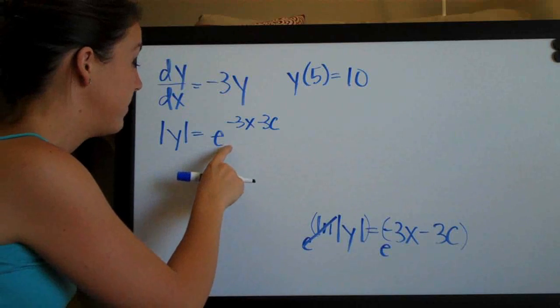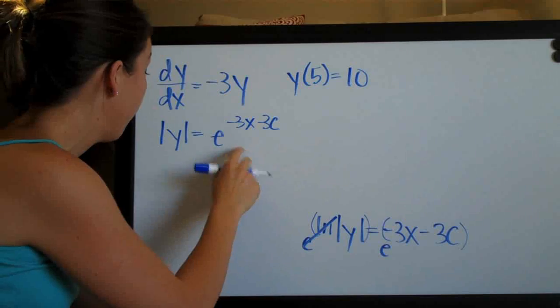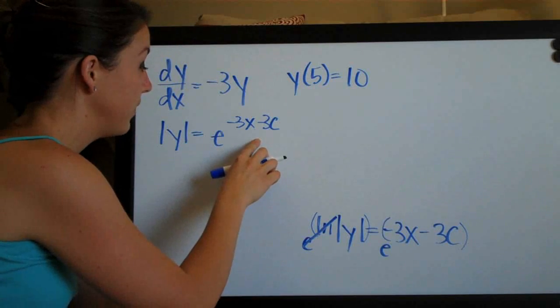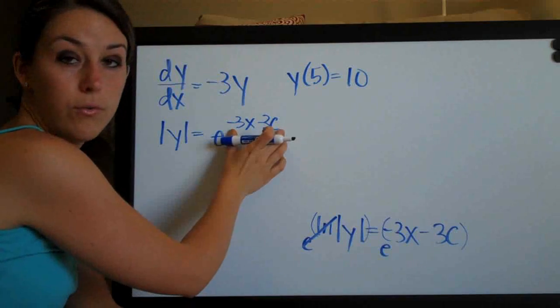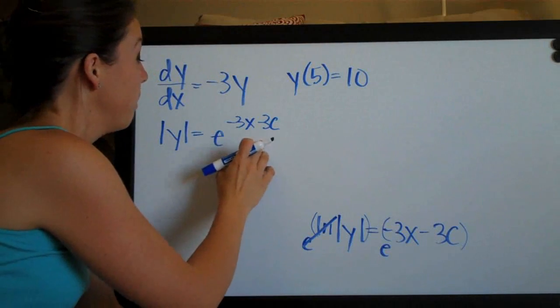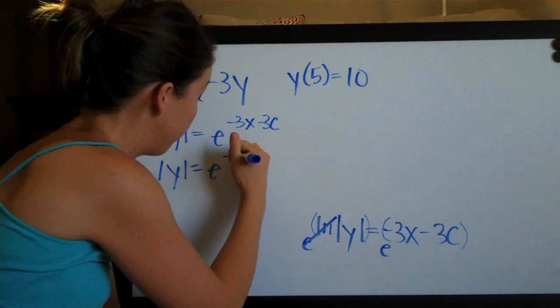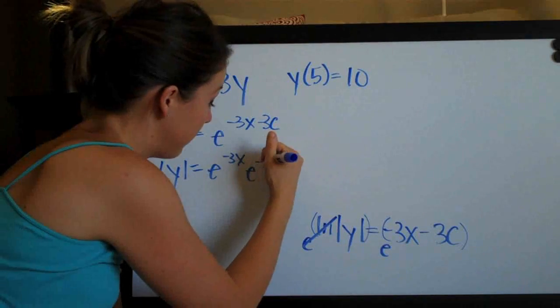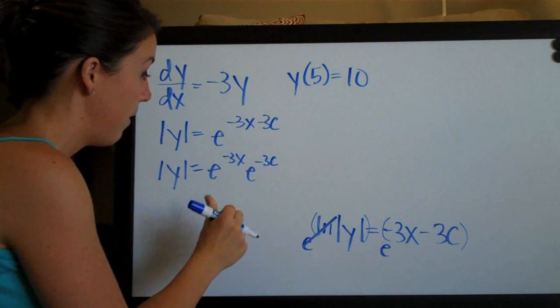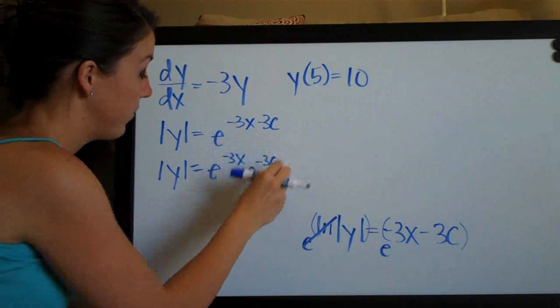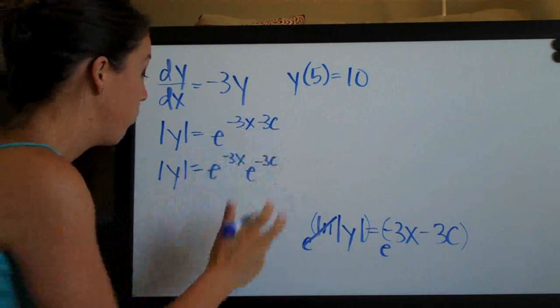Let's go ahead now and simplify this exponent over here. What we need to do is use the formula that tells us that when we have a polynomial exponent on e, this e to the negative 3x minus 3c is the same thing as e to the negative 3x times e to the negative 3c. You can break apart the exponent like that as long as you remember to keep the negative signs. It's these two e's with their exponents multiplied together instead of everything in one exponent.